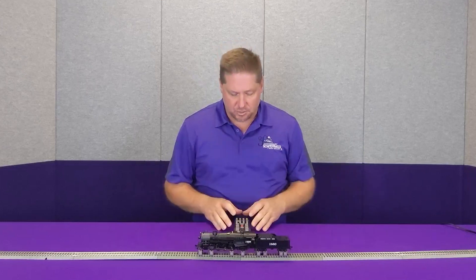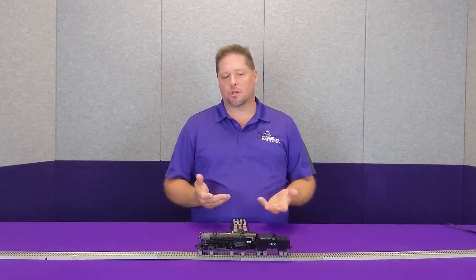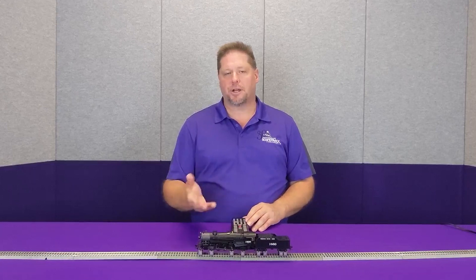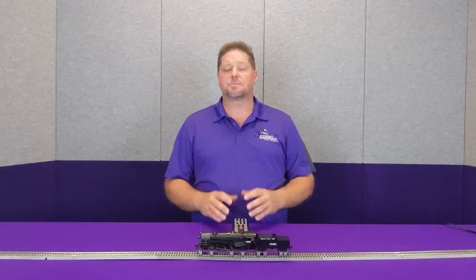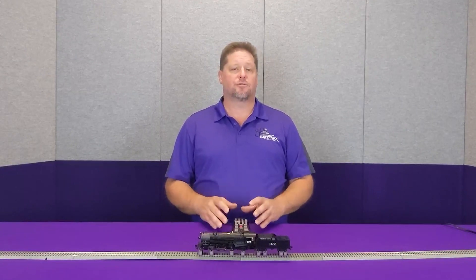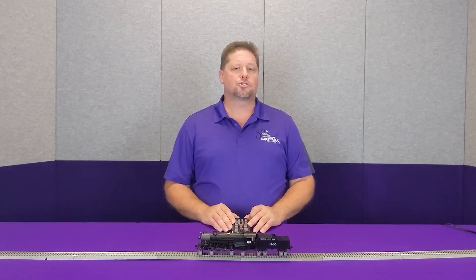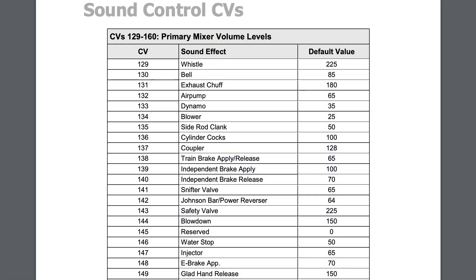Let's try this out. We're going to go ahead and unmute the locomotive — you can hear the air compressor there, and you'll hear the blower running in the background. Individual volume control allows me to adjust the volume. When you go to the user's guide, you'll see a full list of CVs and individual sound volumes with the CV number that coordinates with each sound effect, so that you can adjust the volume.